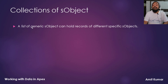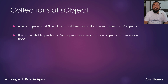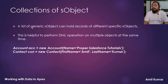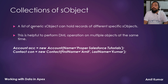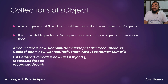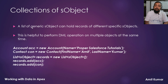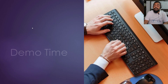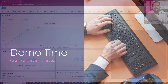A list of generic SObject can hold records of different specific SObjects, and this is helpful to perform bulk operations on multiple objects at the same time. For example, you can create two different specific SObjects — an account variable ACC and a contact variable CON — both storing values of different fields. You can then add these different SObjects inside a list of generic SObject and perform a DML operation on both types using this generic SObject list.